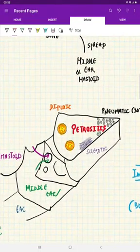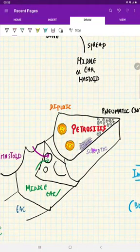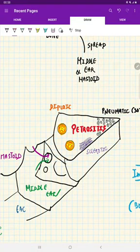The petrous part of temporal bone has marrow sclerotic and pneumatic parts. Pneumatic air cells are only present in 30% of cases. You'd think infection spreads through the pneumatic cells, but it has a separate route.